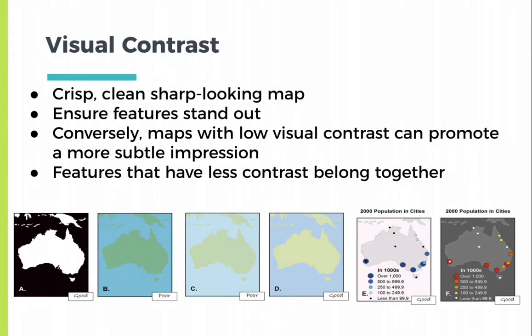The next principle is visual contrast. Make a crisp, clean, sharp-looking map where the feature stands out. If you choose to make a subtle map, ensure the information you wish to put forward pops out, and features that have less contrast belong together. The map on the far left is good, if a little stark, and the next two have fairly poor contrast, but the third has just enough. The last two show gradations of color that correspond to relative density of population, so use similar colors to show relationships.